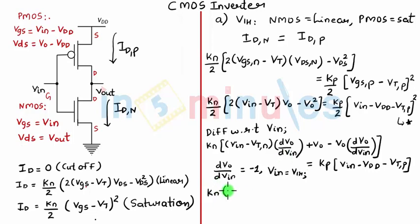...so this is minus VIH plus VTN plus Vout, equal to KP times (VIH minus VDD minus VTP). Now we have the equation in terms of VIH.